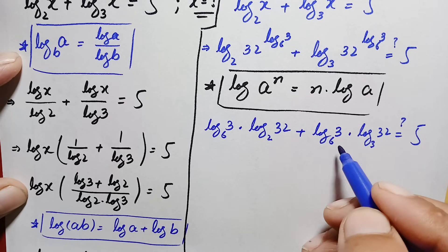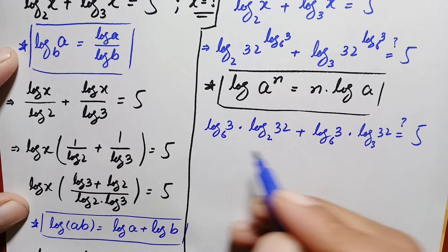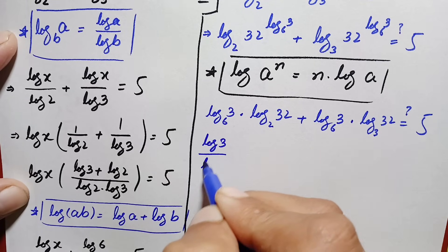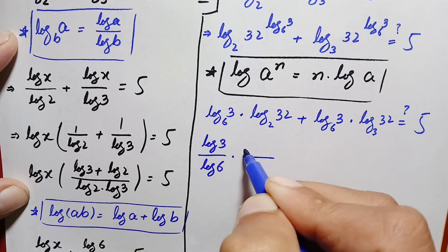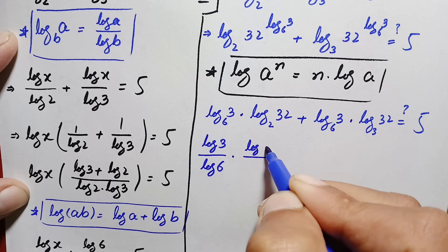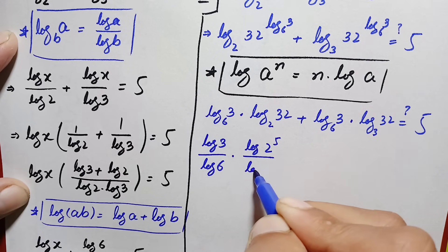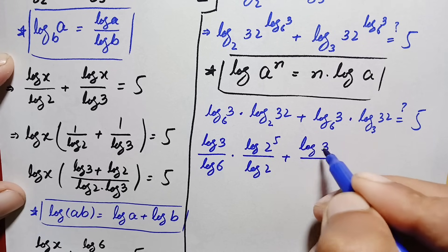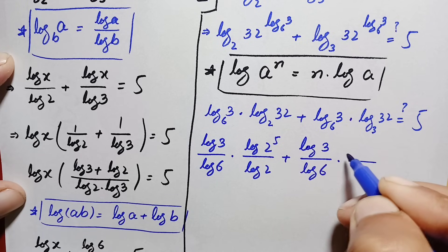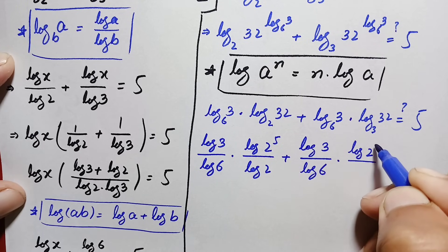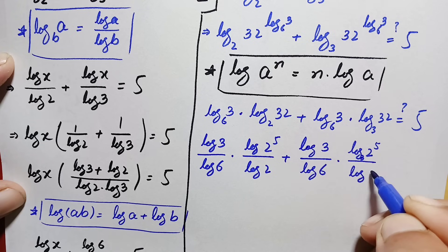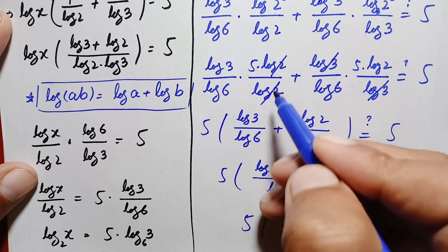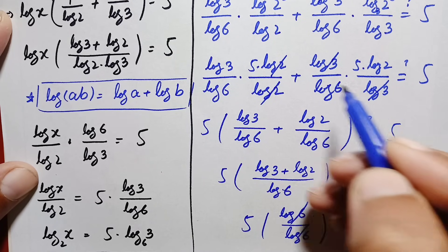Applying the change of base property to each term, and writing 32 as 2 raised to power 5, the left hand side becomes: (log 3 / log 6) times (log 2⁵ / log 2) plus (log 3 / log 6) times (log 2⁵ / log 3) equals 5. The log 2 cancels in the first term and log 3 cancels in the second term.